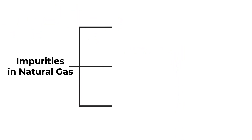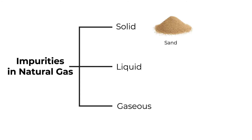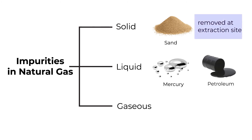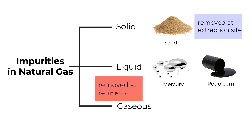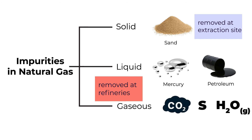The refining process of natural gas starts at the extraction site itself. Natural gas contains impurities in solid, liquid, and gaseous forms. Sand and other solid impurities are removed at the extraction site. Liquid impurities such as petroleum, natural gas liquids, and water are removed at refineries. Gaseous impurities such as carbon dioxide, sulfur, and water vapor are also removed at refineries.